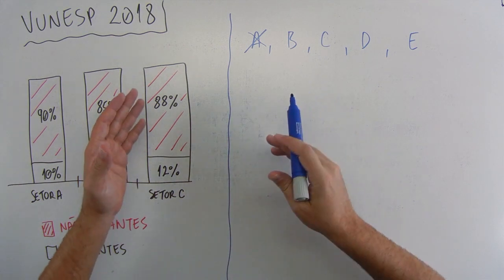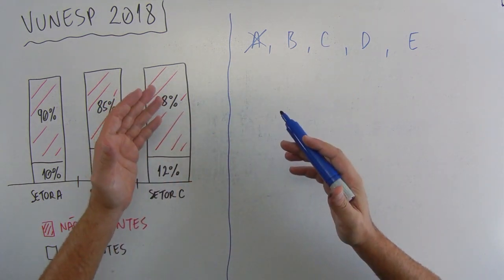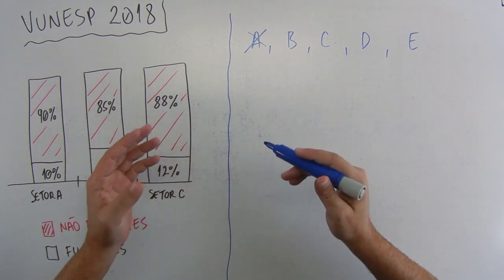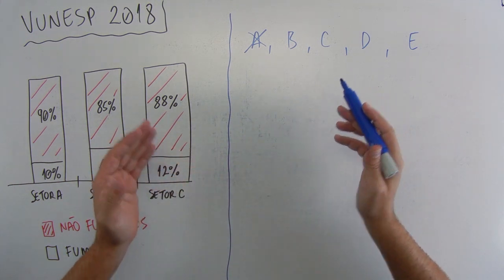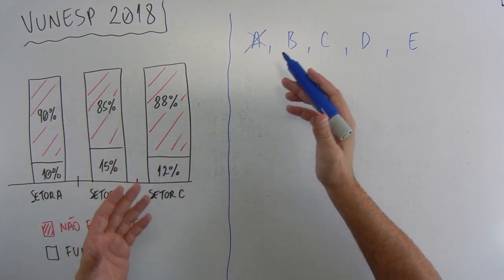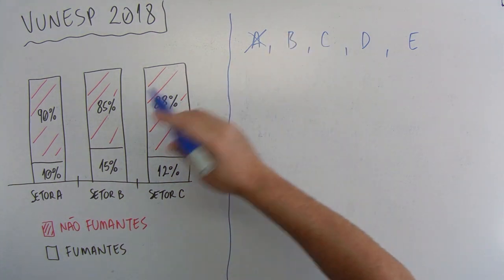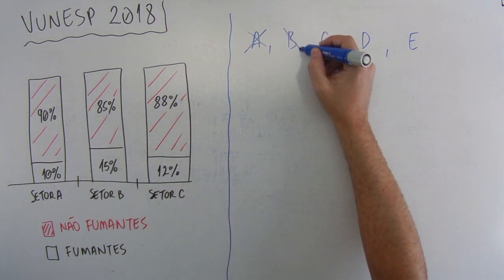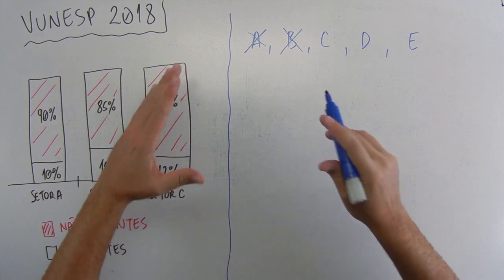Letra B. Os setores, os três setores têm números distintos de funcionários. A gente também não tem certeza disso, como a gente não tem certeza que eles são iguais, pela mesma razão da alternativa A. Não tem como a gente descobrir, então a alternativa B está fora também. Vamos ver a alternativa C.